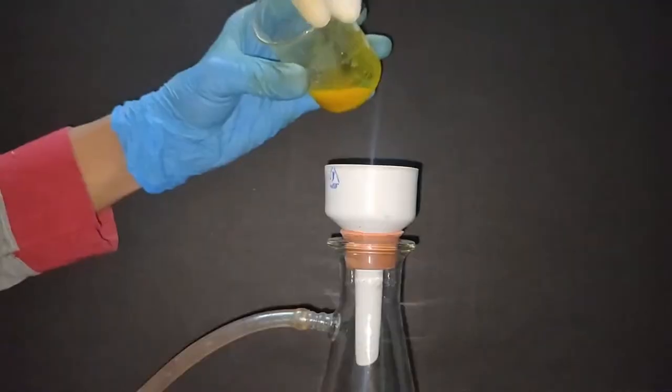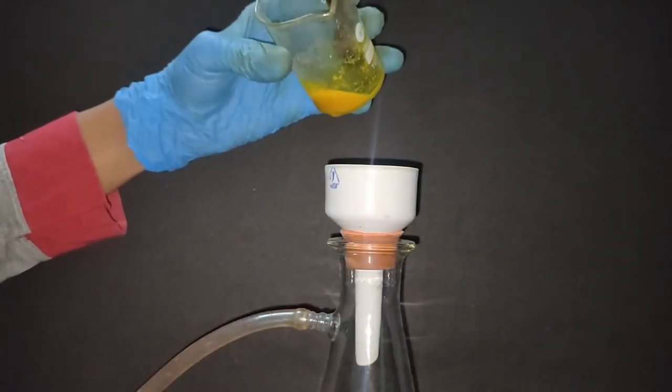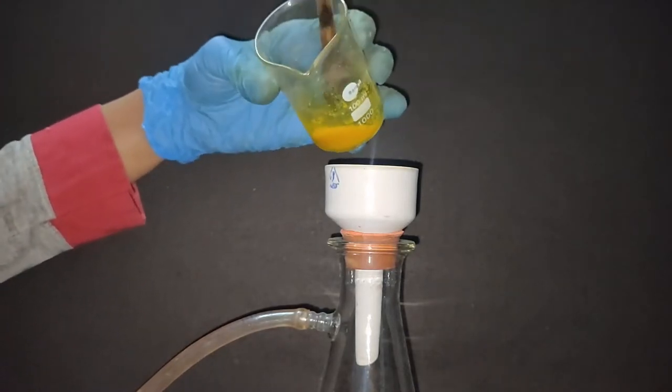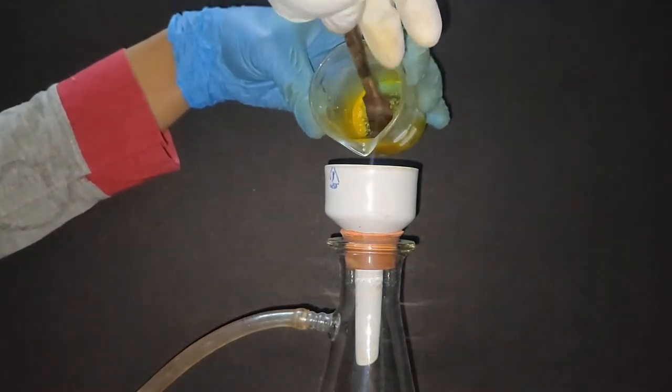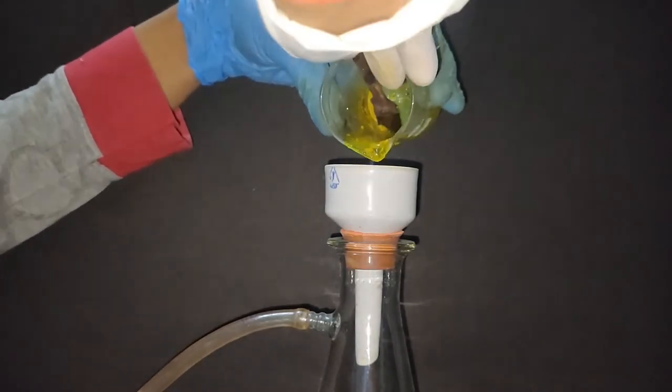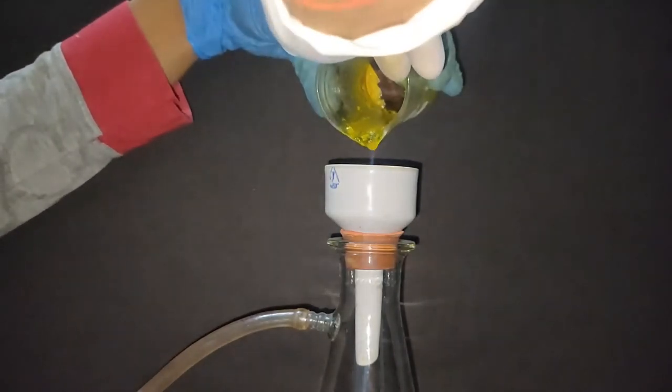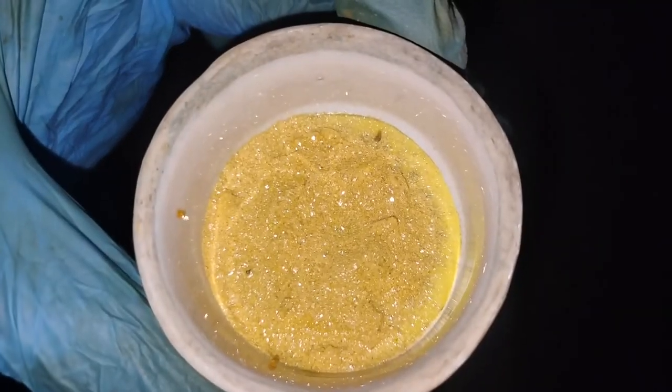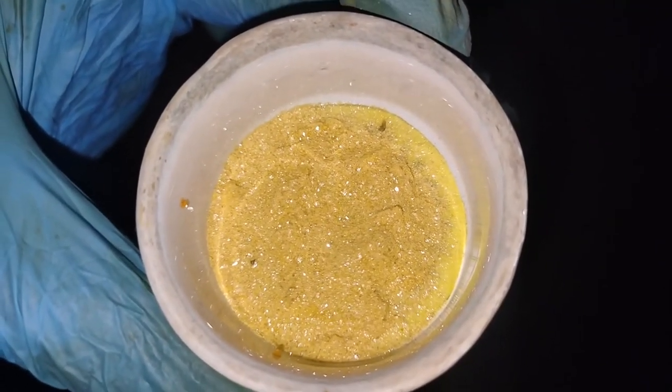Then the crystals were filtered off using a Buchner funnel. Using the same mother liquor, all the crystals were transferred into the Buchner funnel that I didn't show here. This is recrystallized picric acid.